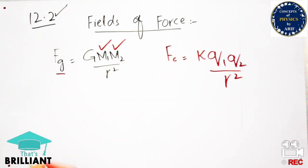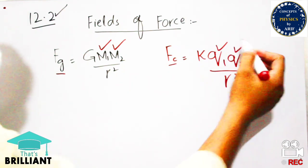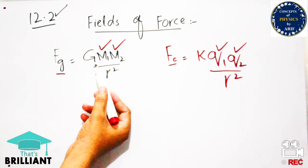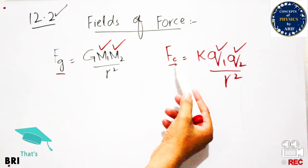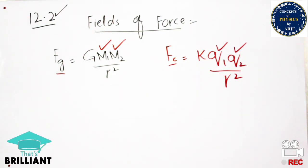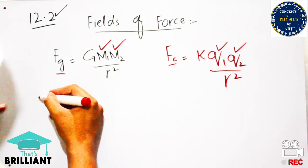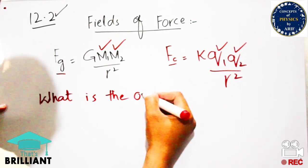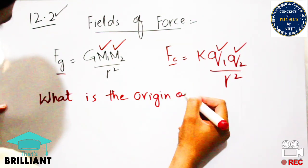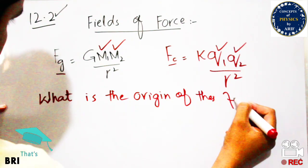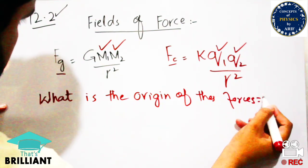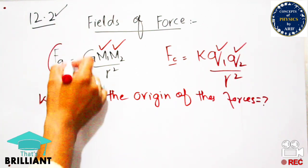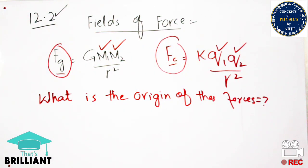Gravitational force depends on mass — it exerts a force on different masses — and Coulomb force is a force between two charges. These two forces have magnitude and direction. The question is: what is the origin of these two forces? How do they originate and from where? Up till now, scientists have not answered this question.